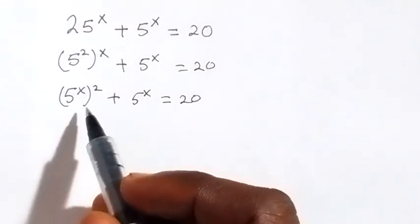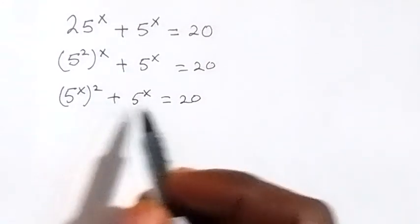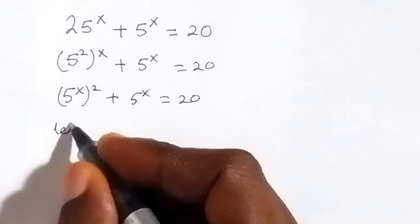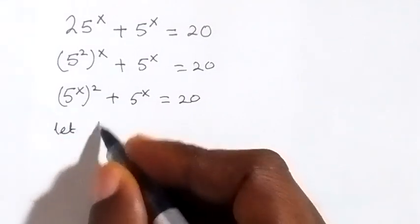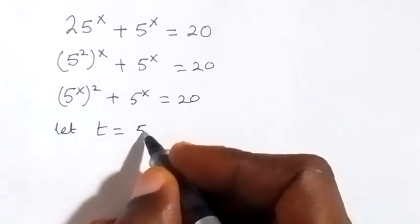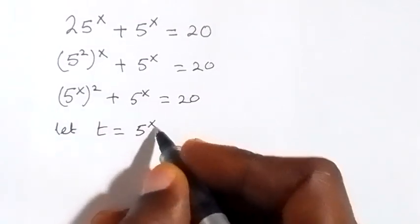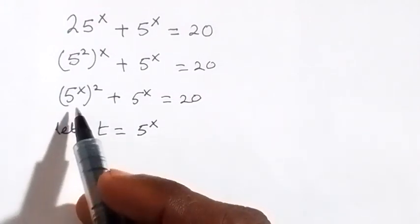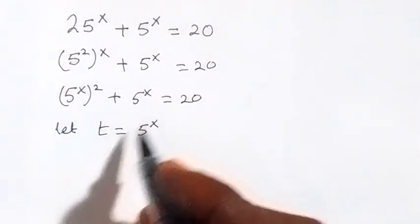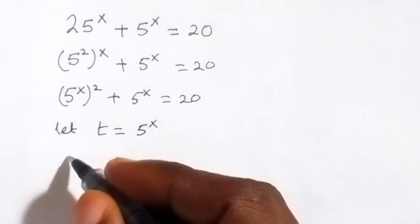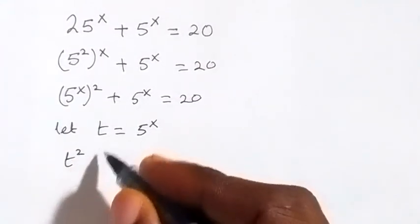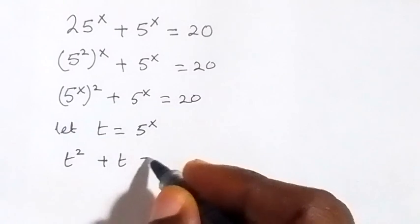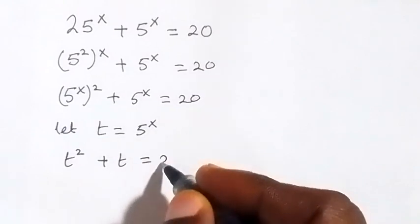Now here we have 5 raised to power x appearing twice. Let a letter t be equal to 5 raised to power x. We can rewrite this by replacing 5 raised to power x with t, and we have t squared plus t equals 20.